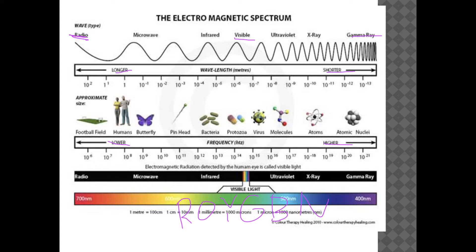Notice how much the wavelength changes — it's pretty crazy. A radio wave is about the length of a football field, and when we get all the way down to gamma rays, they're the size of an atomic nucleus.